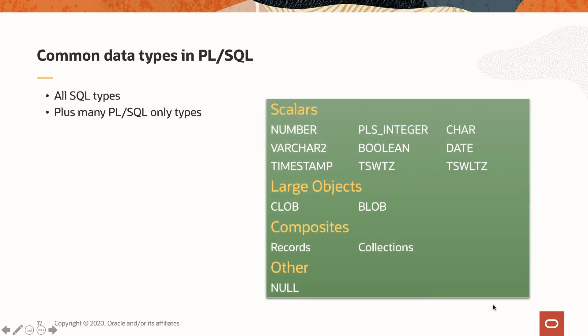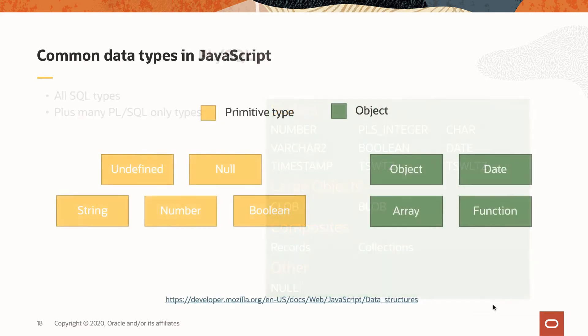Here are the most common data types in PL/SQL: you have access to all SQL types as well as PL/SQL-only types such as the new JSON data types. In JavaScript, the most common data types are broken into two groups — primitive types and objects. Primitive types include undefined, null, string, number, and Boolean. Objects include the base object type, from which date, array, and function all inherit. Note that function is a data type in JavaScript — something we'll revisit shortly.